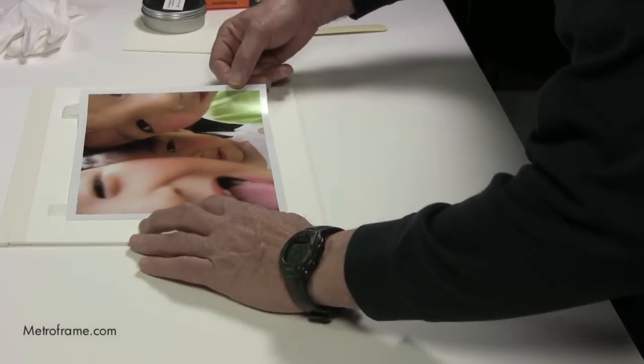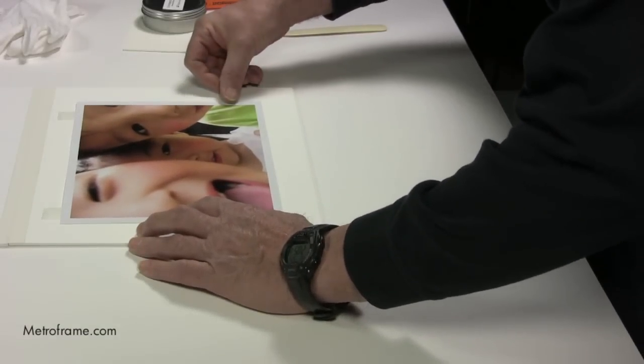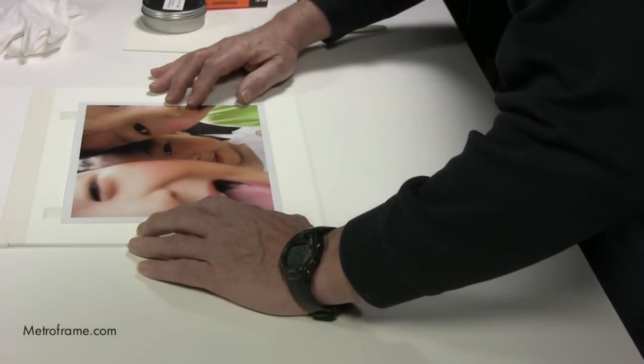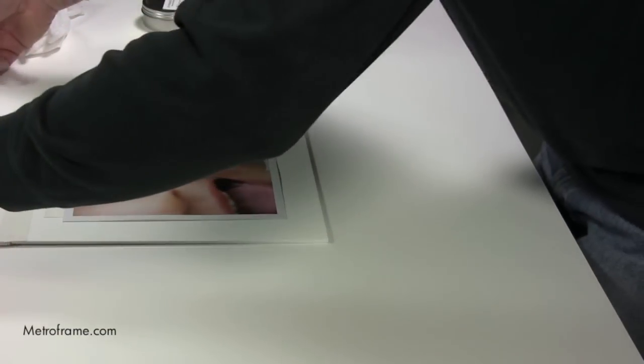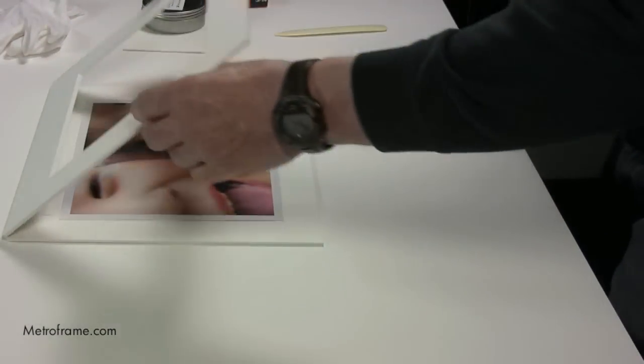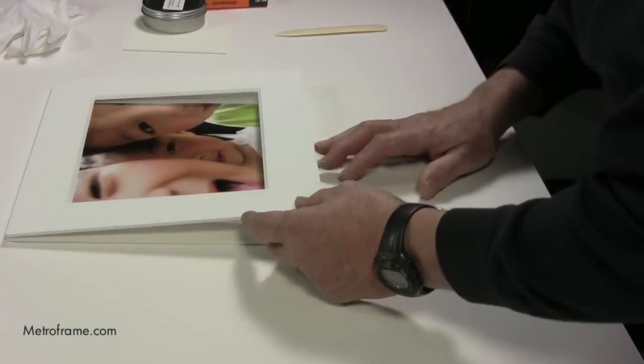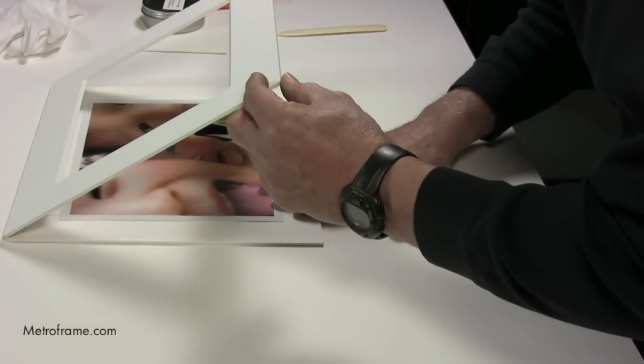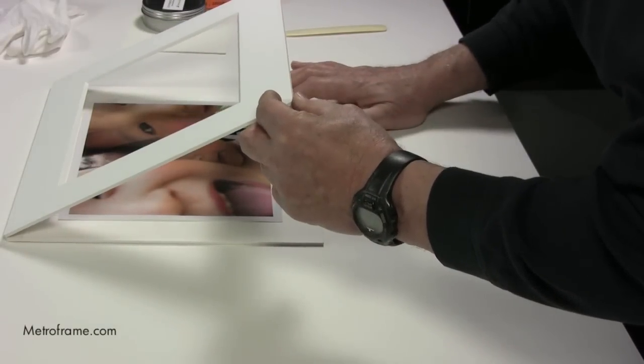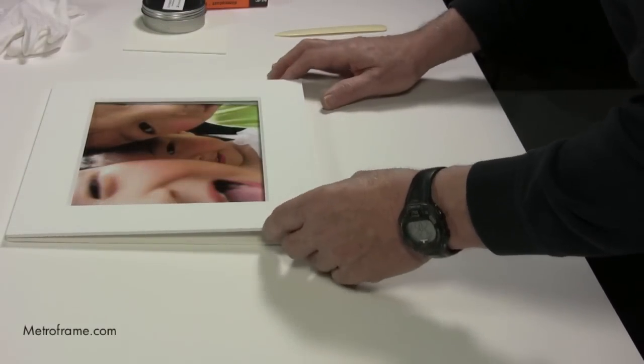Now turn the photograph over and approximately center it on the backing board. Then take the mat and bring it over the artwork, taking your hand and adjusting it so it is perfectly centered under the mat.